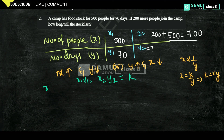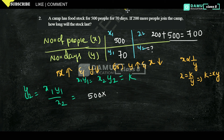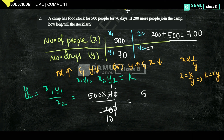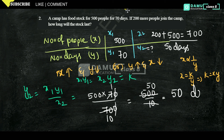Since x and y are inversely proportional, k equals x times y, so x1·y1 equals x2·y2. Therefore y2 equals x1·y1 divided by x2, which is 500 times 70 divided by 700. Cancelling zeros: 500 divided by 10 gives 50, so y2 equals 50 days. The food stock will last 50 days. Thanks for watching, please subscribe.